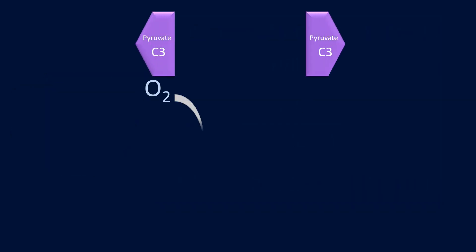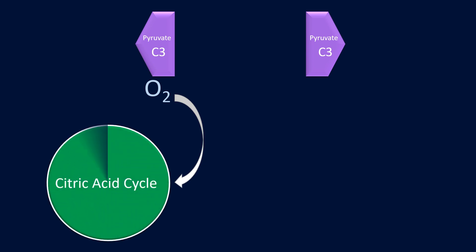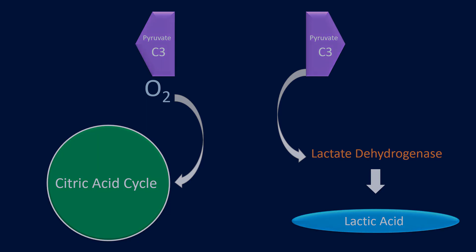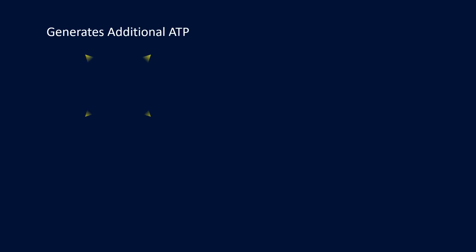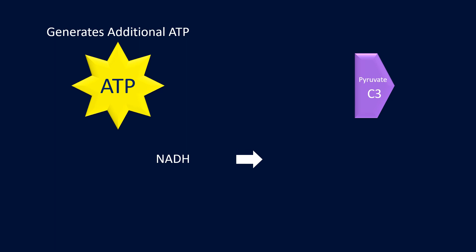At this point, if sufficient oxygen is available, the pyruvate can subsequently be used in the citric acid cycle, which is part of the aerobic pathways. However, when oxygen is limited or absent, the pyruvate is converted by the action of the enzyme lactate dehydrogenase into lactic acid. This metabolic pathway generates additional ATP, helps maintain the pyruvate concentration low allowing glycolysis to continue, and oxidizes NADH into the NAD+ required by glycolysis.